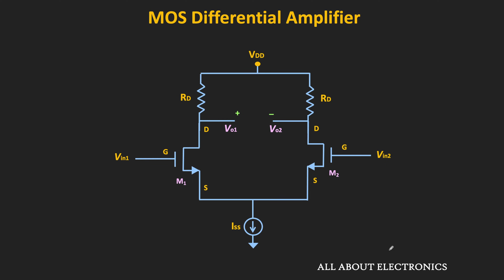In the previous video, through a small signal analysis, we found the differential gain of this differential amplifier. We have seen that this differential gain is typically very low. As per this expression, the differential gain can be increased either by increasing the value of the drain resistor Rd or by increasing the transconductance of the MOSFET. However, if we try to increase the value of Rd, then for the given bias current, the drop across Rd will increase, and to keep the MOSFET in saturation, we need to increase the supply voltage. Therefore, the value of Rd cannot be increased beyond a certain limit.